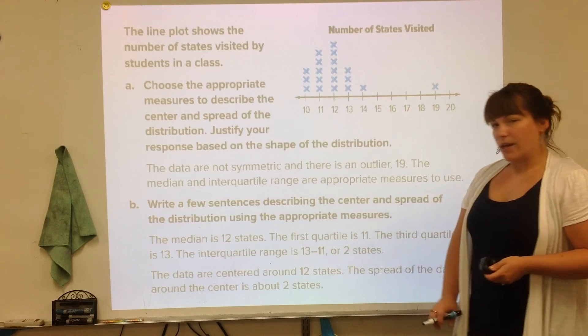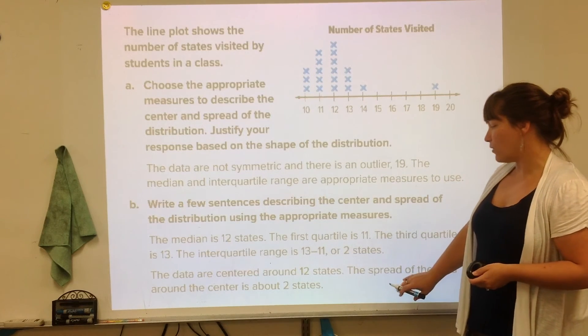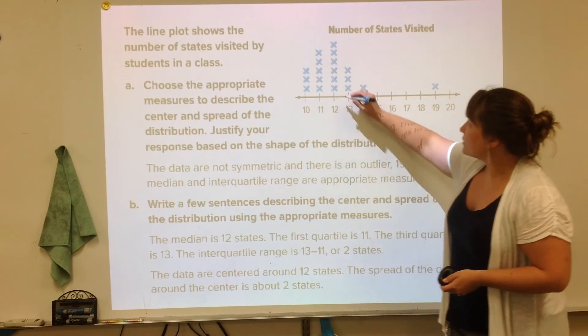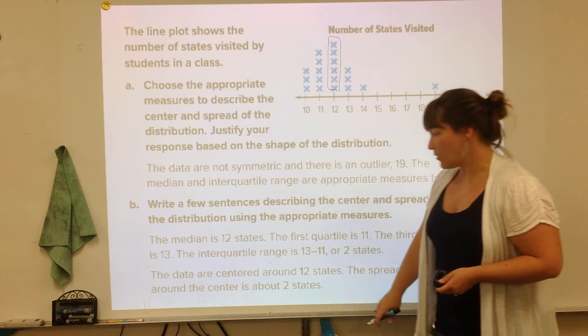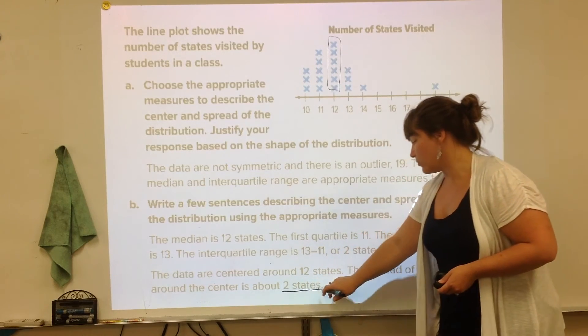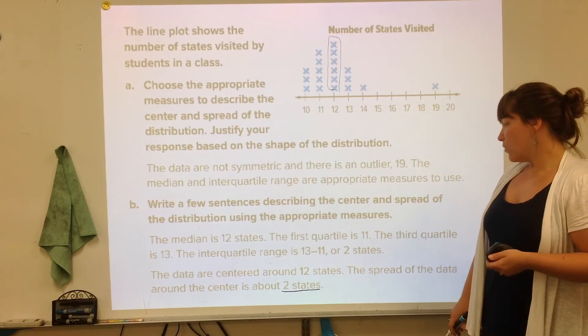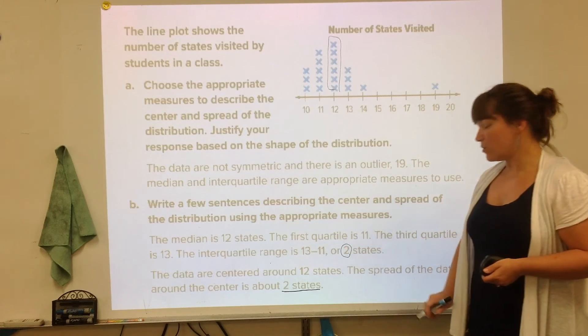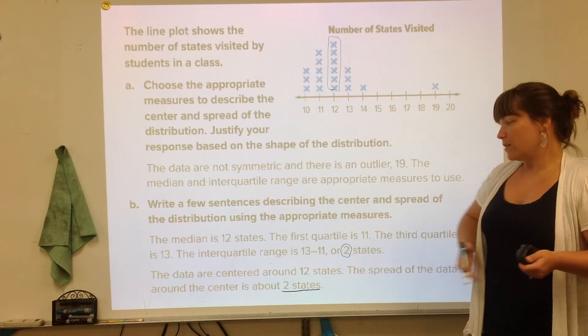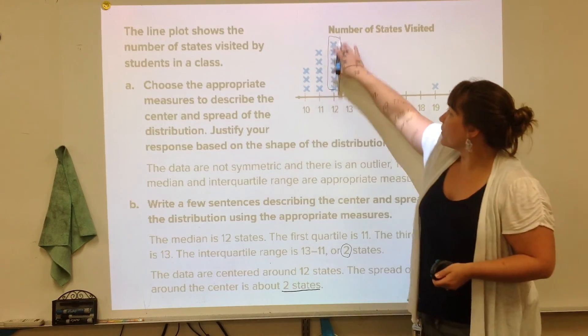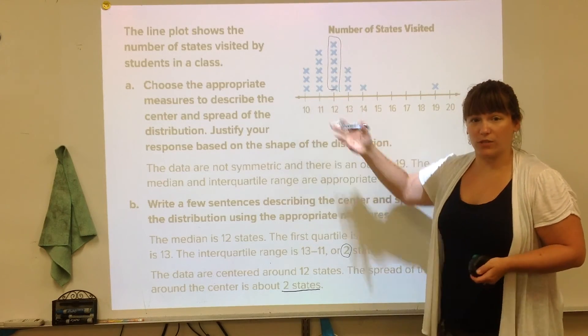Here's the end sentence that is kind of the summary. The data are centered around 12 states. So that's the peak. The spread around the center is about two states. So that's getting at what the IQR will be telling you. Since the IQR is 2, that is saying that most of the data is centered around here and about two away, which is actually what you're seeing.